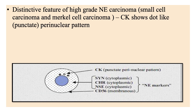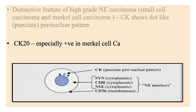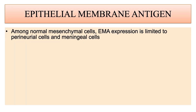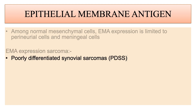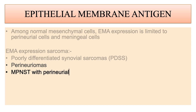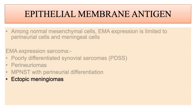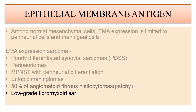A distinctive feature of high-grade neuroendocrine carcinomas like small cell carcinoma and Merkel cell carcinoma is that cytokeratin reactivity has a dot-like perinuclear pattern, thought to be due to formation of cytokeratin tangles. CK20 is basically positive in Merkel cell carcinoma. Among normal mesenchymal cells, EMA expression is limited to perineural cells and meningeal cells. EMA is a sensitive but less specific marker of synovial sarcoma, perineuroma, MPNST with perineural differentiation, ectopic meningiomas, approximately 50% of angiomatoid fibrous histiocytomas, and low-grade fibromyxoid sarcoma.